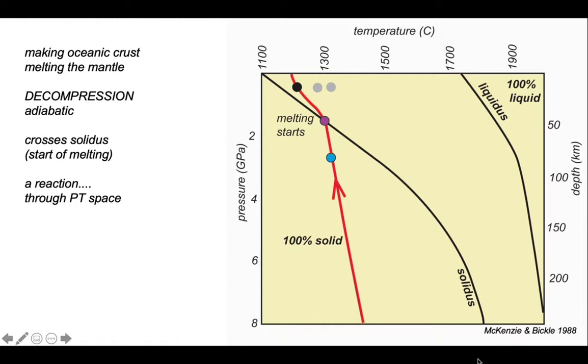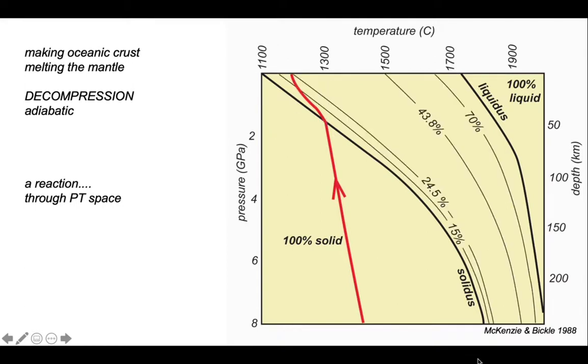Melting is a reaction that occupies a range of positions in pressure-temperature space. We can contour up the space between solidus and liquidus to reveal the proportion of mantle that becomes melt as it passes through this domain.